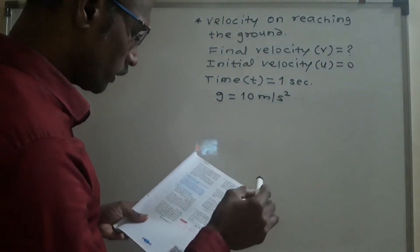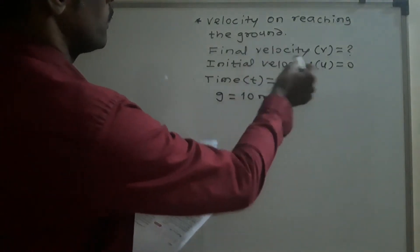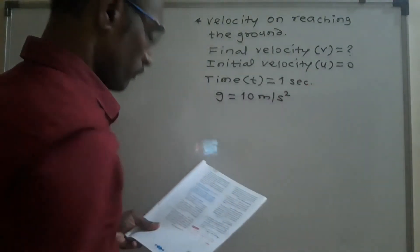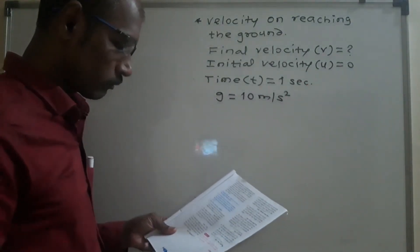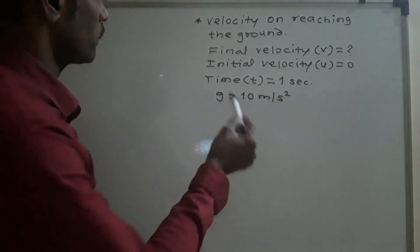Now calculate its speed on reaching the ground, that is final velocity v is equal to question mark, and the height of the table.